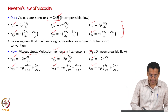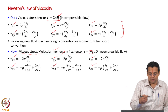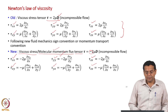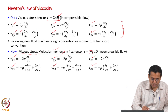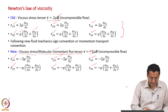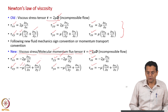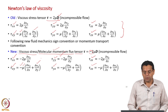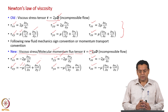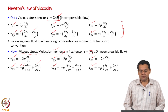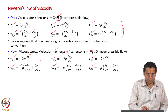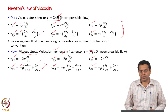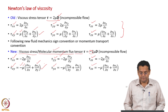What we have discussed in the previous slide is a comparison between the one-dimensional form of Newton's law of viscosity — the old and the new — which means we have taken mu times dv_x/dy and then minus mu times dv_x/dy. All our discussions were based on this one-dimensional Newton's law of viscosity. We have just extended that to the three-dimensional form of Newton's law of viscosity.